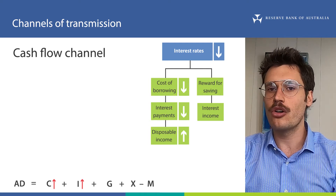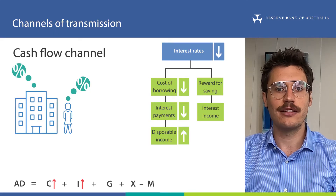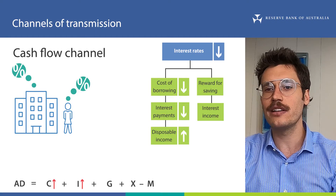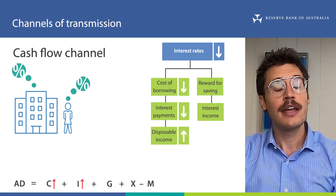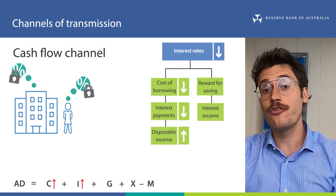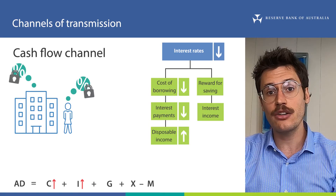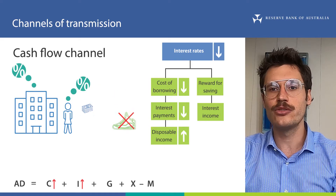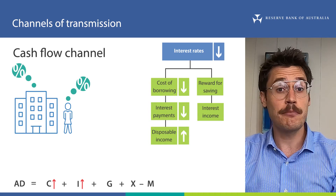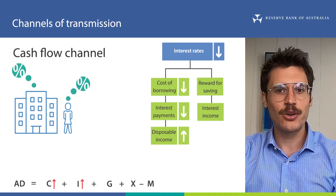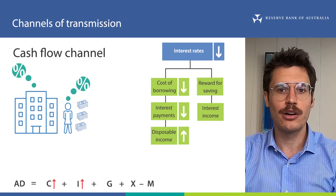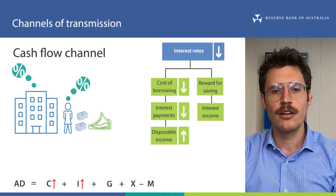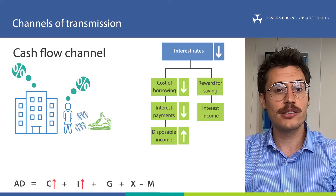The cash flow channel is stronger for certain types of borrowers. Borrowers with variable rate loans can have their interest rate, loan repayments and therefore available cash flows adjust quite quickly following changes to monetary policy. In contrast, borrowers with fixed rate loans will have to wait until the fixed term of their loan expires before their lending rate and repayments can change. In addition, some borrowers can't spend as much as they would like because they need to make sure they can meet their loan repayments. For these borrowers, if they had more income available — say because their loan repayments were lower — they would likely spend it today rather than saving it. So for many borrowers, lower lending rates lead to more consumption or investment.